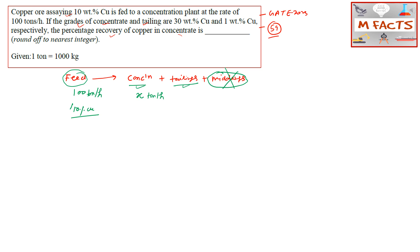Since we assume only two outputs — concentrate and tailings — and the total feed is 100 tons per hour, the tailings rate is simply (100 − x) tons per hour. The tailings contain 1 weight percent copper. This is a straightforward input-output mass balance.